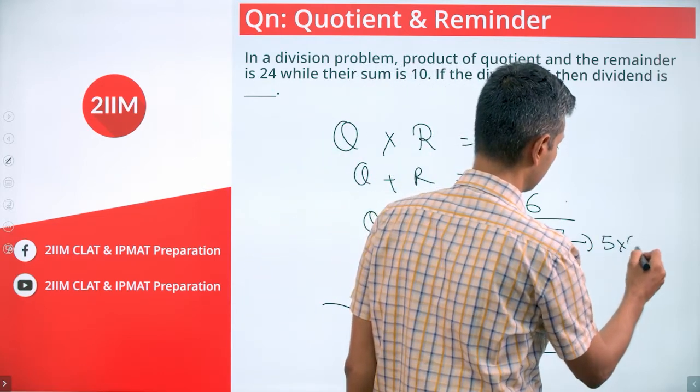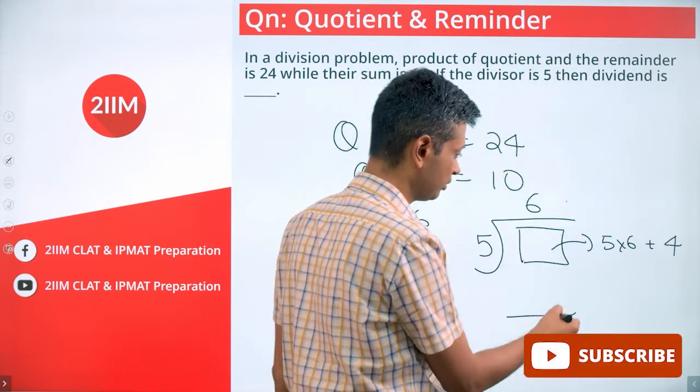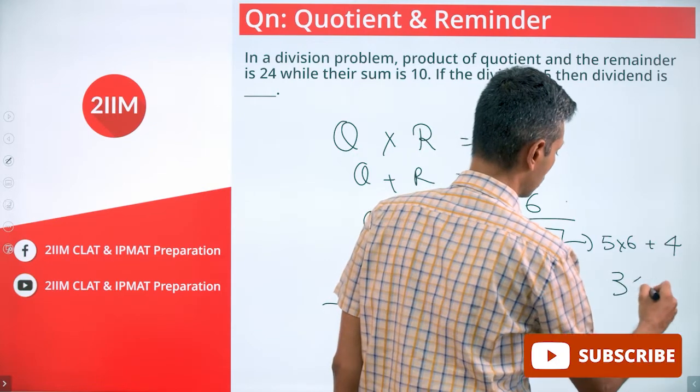This number is 5 into 6 plus 4. Five sits in this number 6 times and leaves a remainder of 4. 30 plus 4, 34.